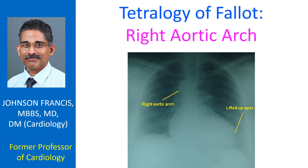The right sided aortic arch is seen indenting the tracheal air column on the right side. There is mild cardiomegaly and right atrial enlargement as well in this adult person with tetralogy of Fallot and associated inferior wall myocardial infarction. The lung fields are oligemic due to the right ventricular outflow tract obstruction in tetralogy of Fallot.